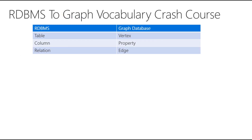First, let's do an RDBMS to graph vocabulary crash course. With MySQL or SQL Server, we're used to the following terms: table, column, relations. Graph databases use a completely different vocabulary because the model is different, so it's normal that the vocabulary differs. Here's a little parallel we can draw between those two: table maps to vertex or vertices, columns to properties, and relations to edges. They're not one-to-one — they're completely different, but it gives you a basic foundation on which to build.